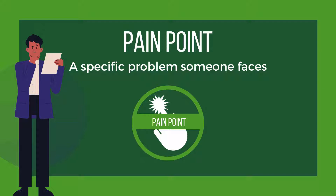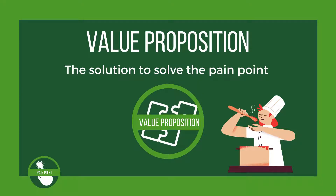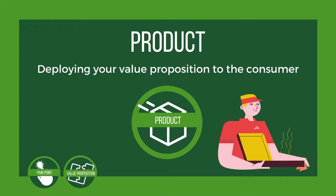The first element is pain point — a specific problem that someone faces. Next, we have value proposition: how the solution you are providing solves the consumer's pain point better than any other option. The third element is product: how you deploy your value proposition to the consumer.